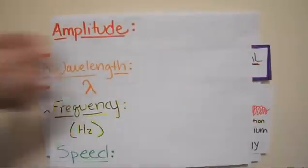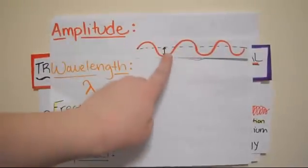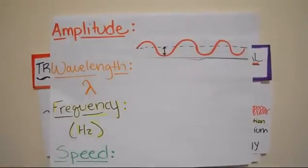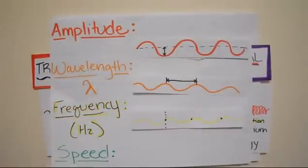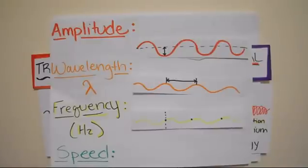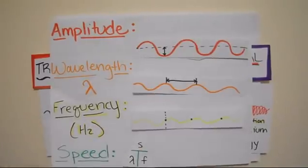Some measurable properties of waves are the amplitude, which is the height of the wave and how much energy it carries. The wavelength, which is the distance between the crest to crest or compression to compression. The frequency, the number of wavelengths passing a fixed point per second, measured in hertz. And the speed of the wave, found by multiplying the wavelength and the frequency.